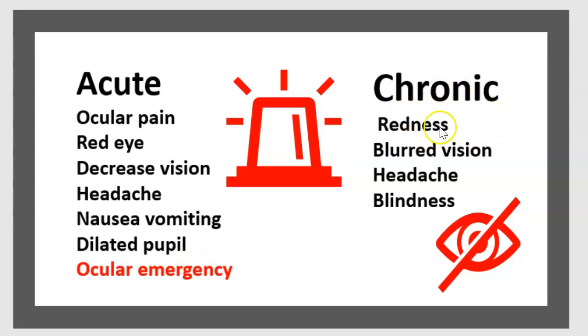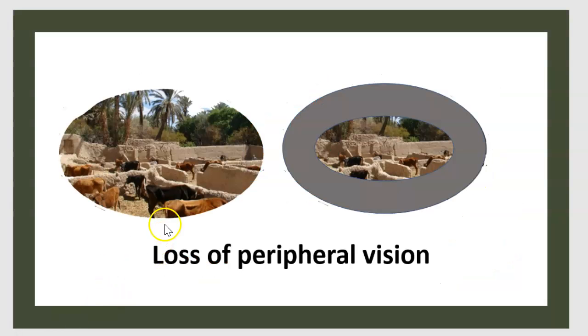Chronic glaucoma symptoms include redness, blurred vision, headache, and eventual blindness. There is also loss of peripheral vision.